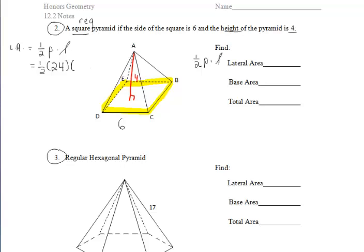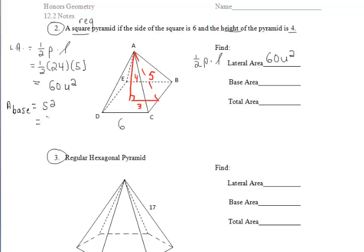To find our slant height, we have to work with the right triangle. Since the altitude of the pyramid hits directly at the center of the base, this red segment is half the length of the side, so it's three. We have a 3-4-5 family, making our slant height five. So the lateral area of our pyramid is 60 units squared, which is the area of our lateral faces or triangles.